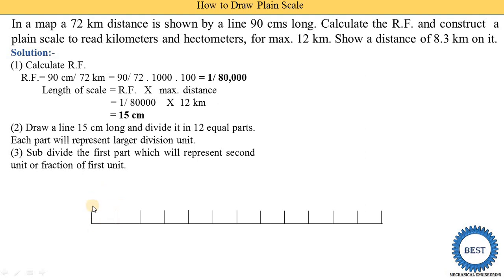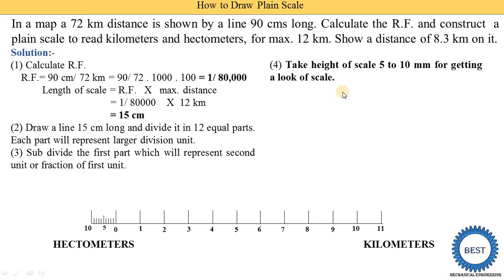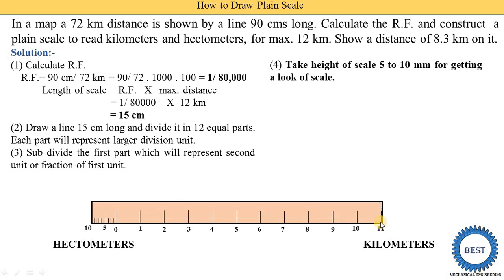Subdivide the first part further — this represents the second unit, the fraction of the first unit. Our first unit is kilometers, and the smallest fraction of a kilometer is the hectometer. The subdivision to the left of zero indicates hectometers (0 to 10), and the main divisions to the right indicate kilometers (0 to 11). Take the height of the scale as 5 to 10 mm for a proper look.